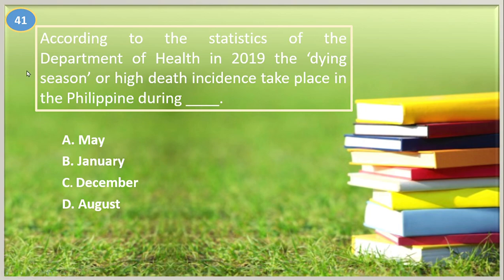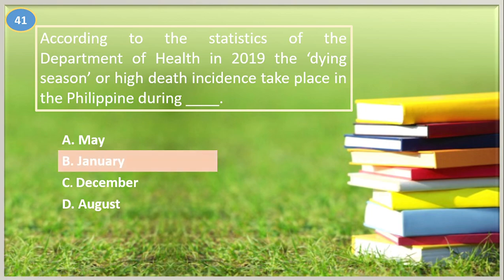Number forty-one. According to the statistics of the Department of Health in the Philippines in 2019, the dying season or high death incidents take place during what month? A. May, B. January, C. December, D. August. The correct answer is letter B, January.